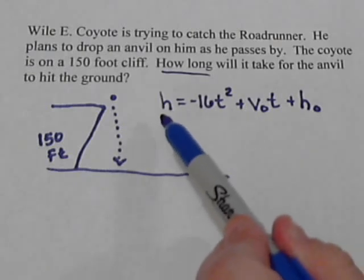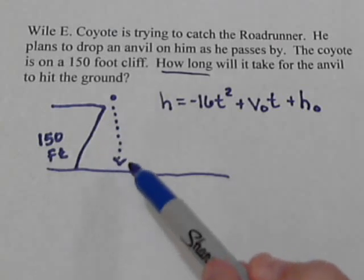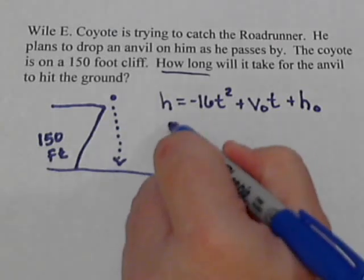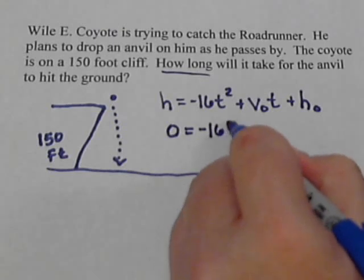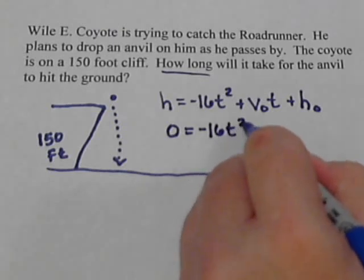So what is the H? Well, the H is the ending height, and our anvil is going to end up on the ground. So we're going to put a 0 in there. Negative 16, we're leaving the T in because we're trying to solve for that.